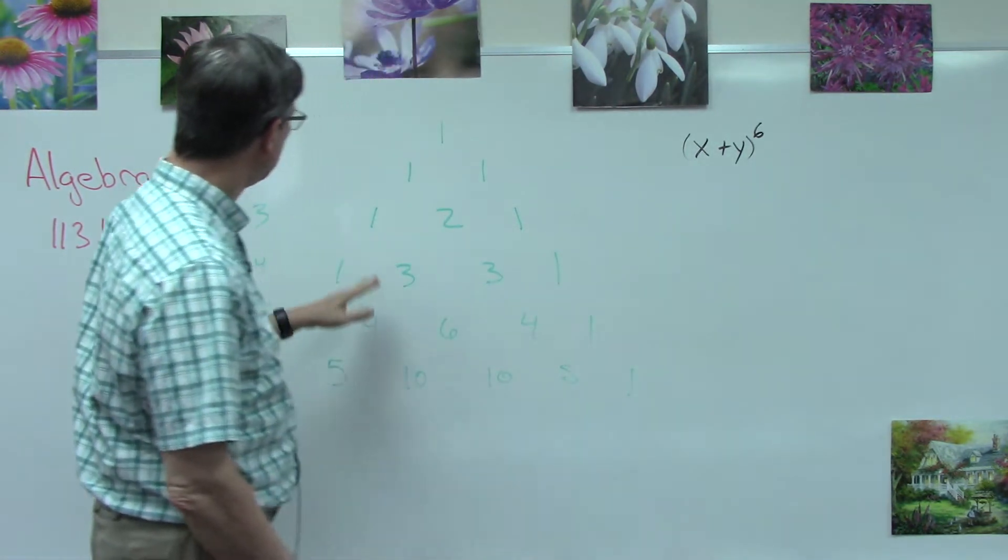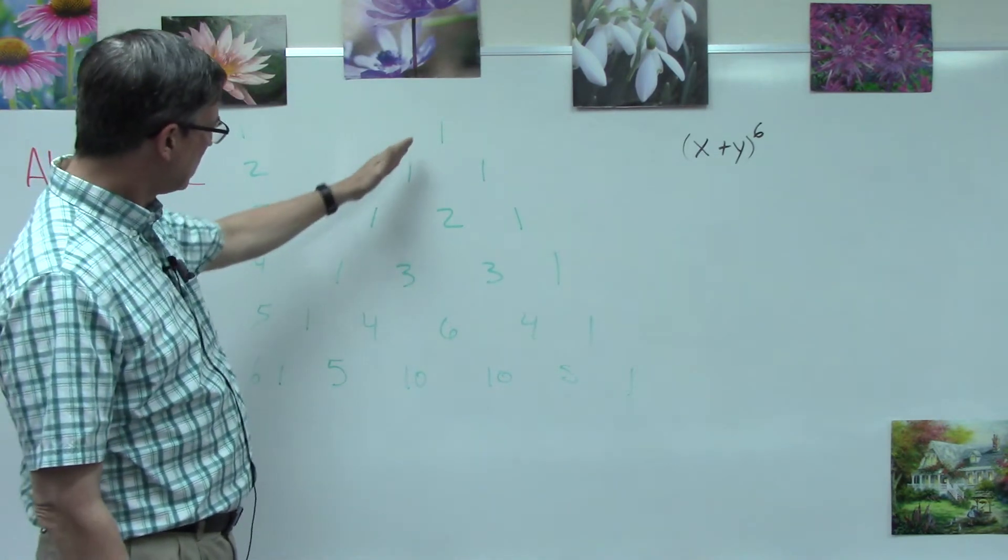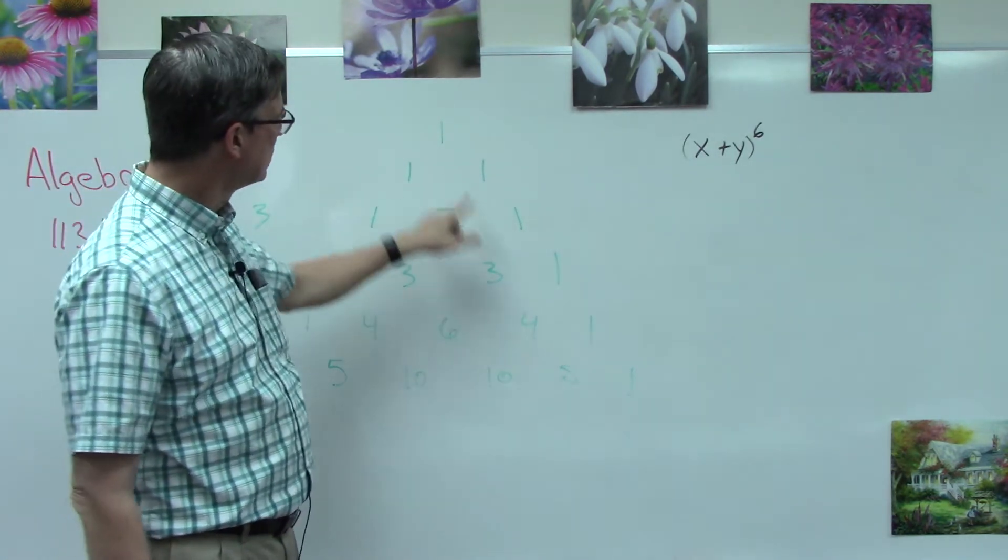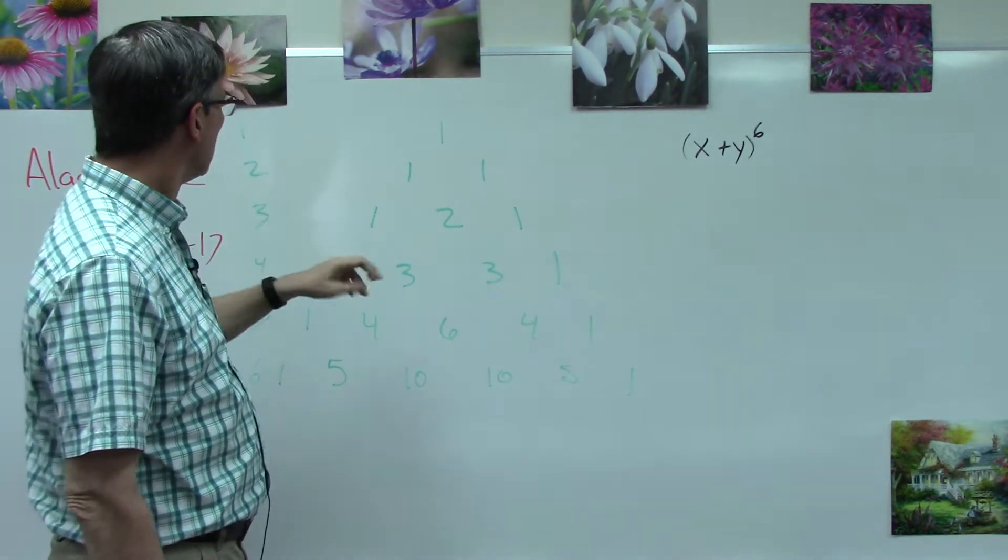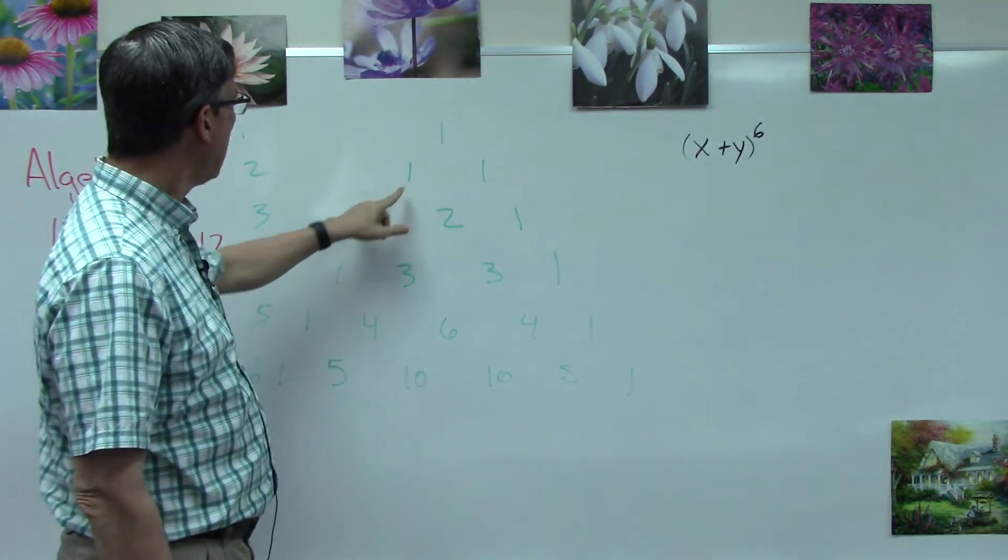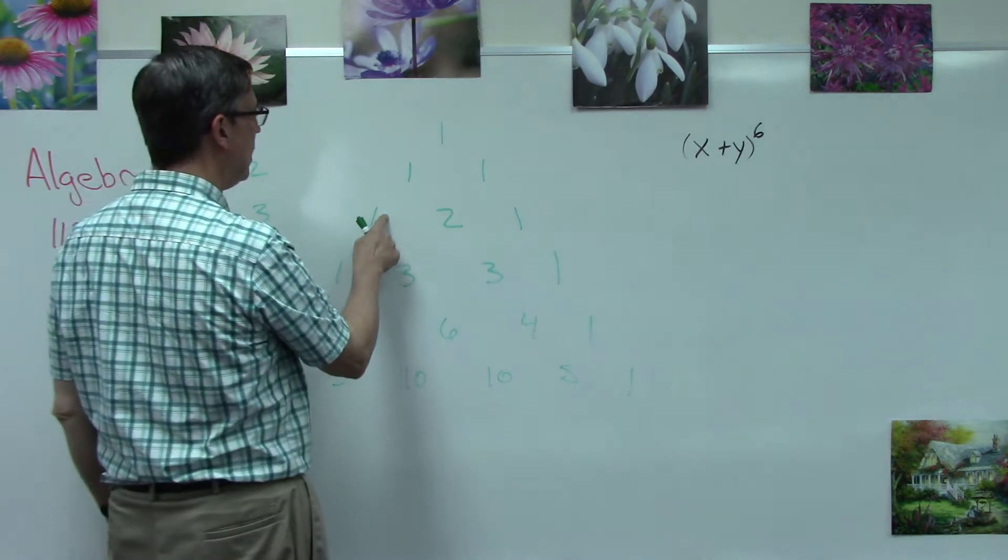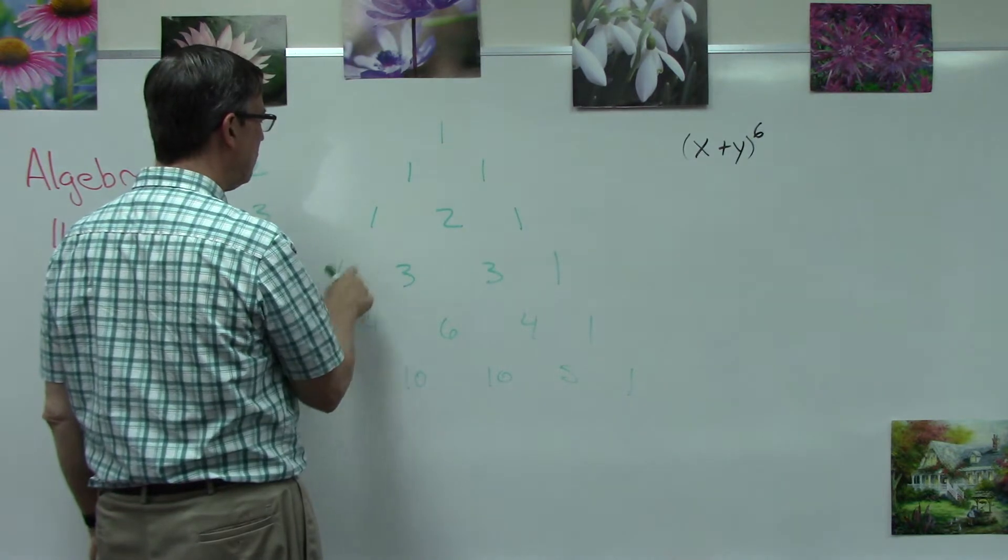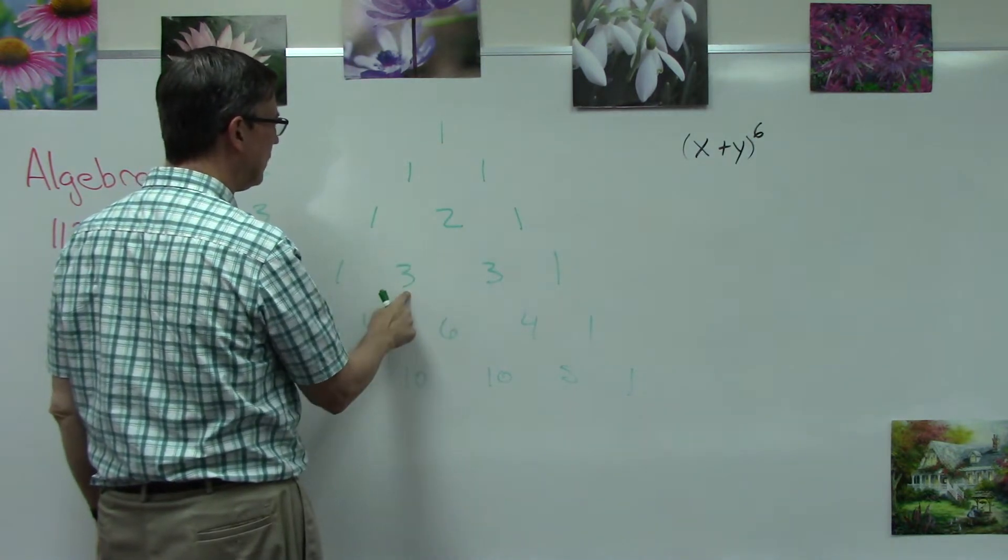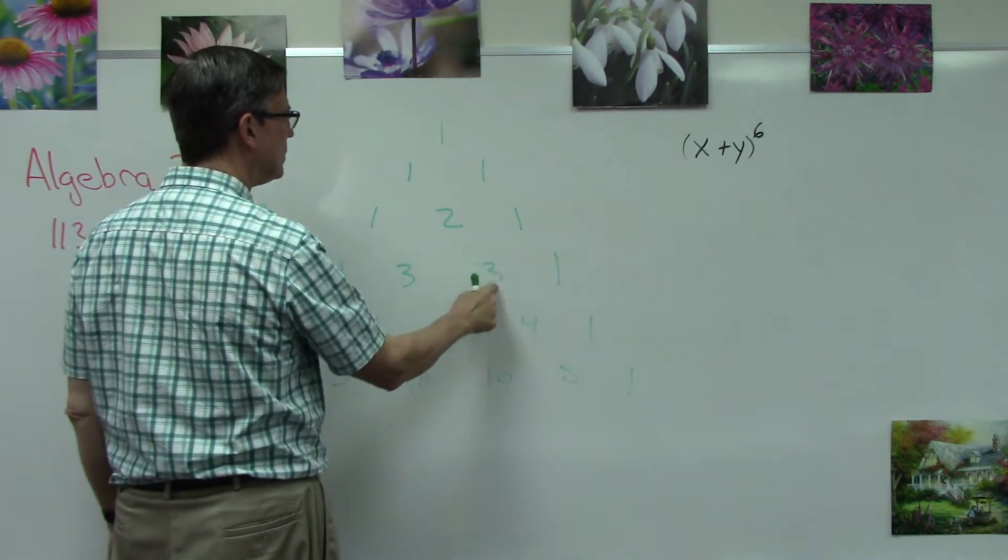We're going to have two ones. Row three: we add one plus two, one plus one to get two. For this row we bring the one down, we do one plus two to get three, two plus one is three.